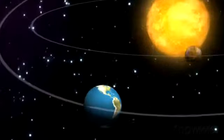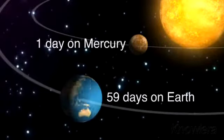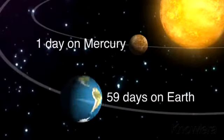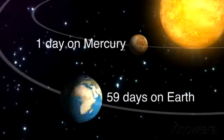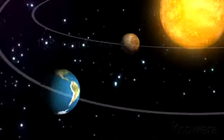Mercury also spins very slowly upon its axis, so a single day on Mercury takes almost 59 Earth days.